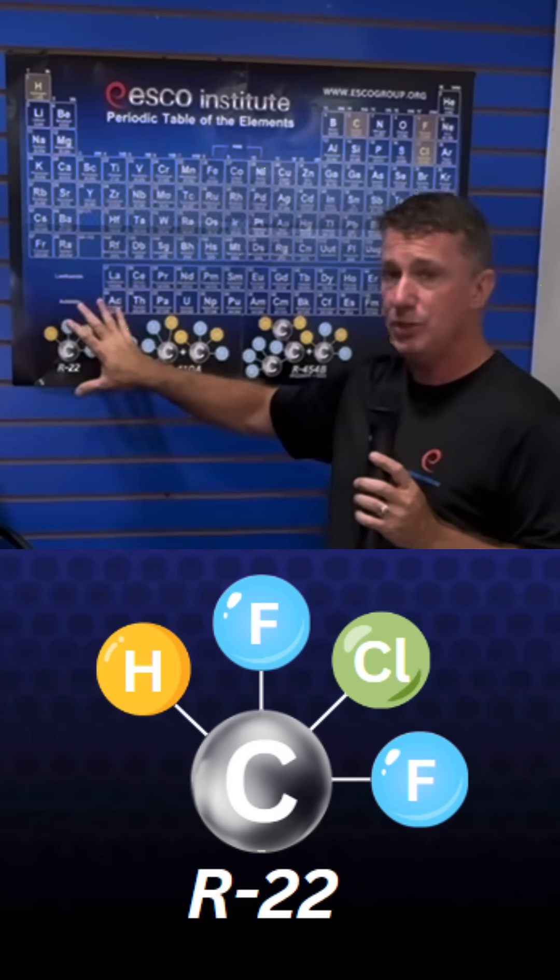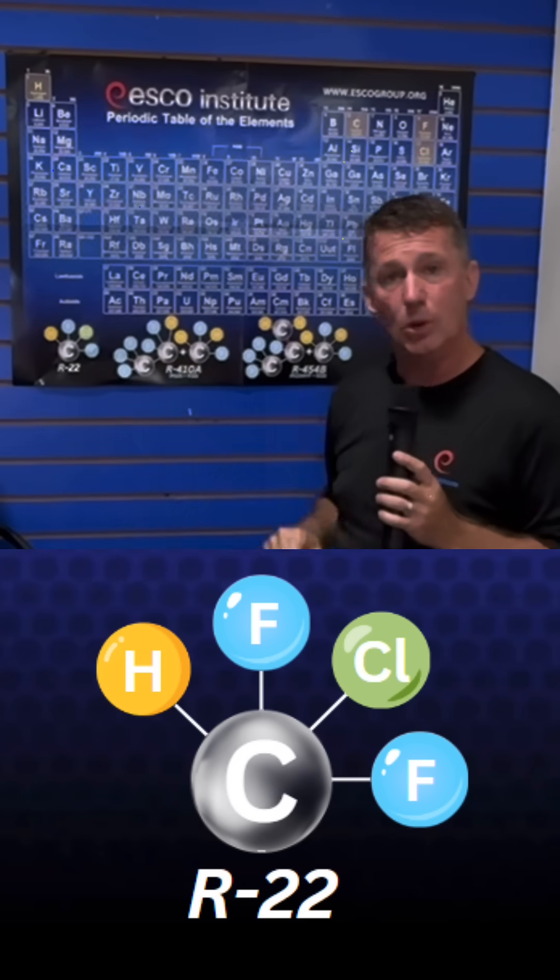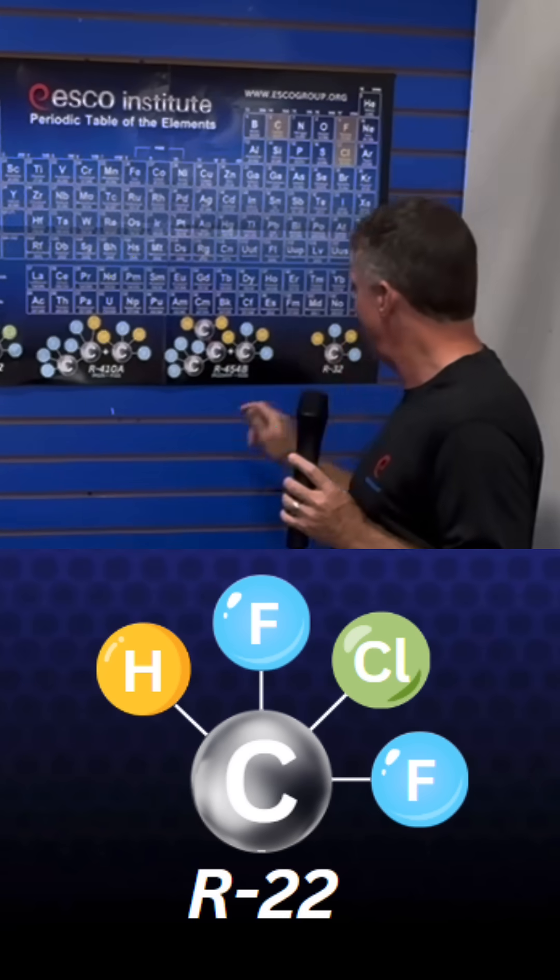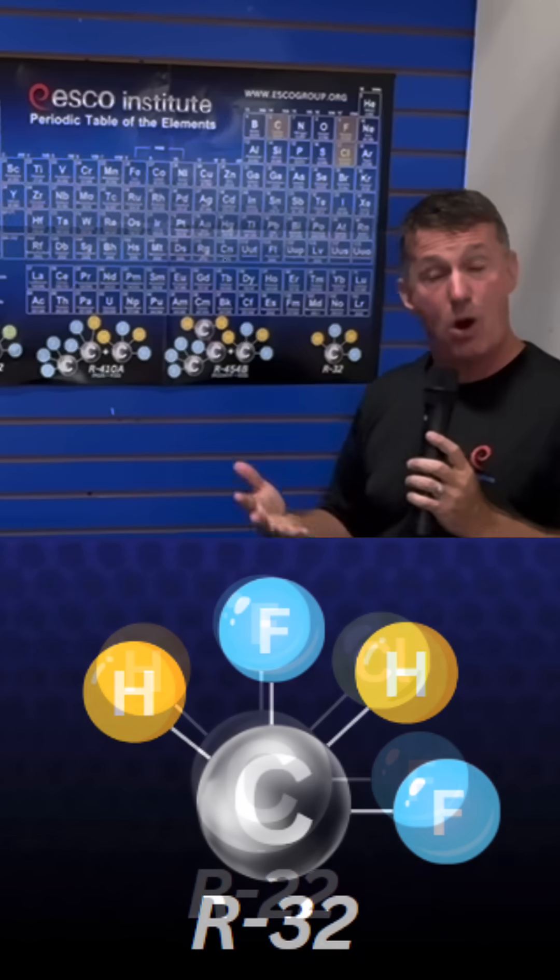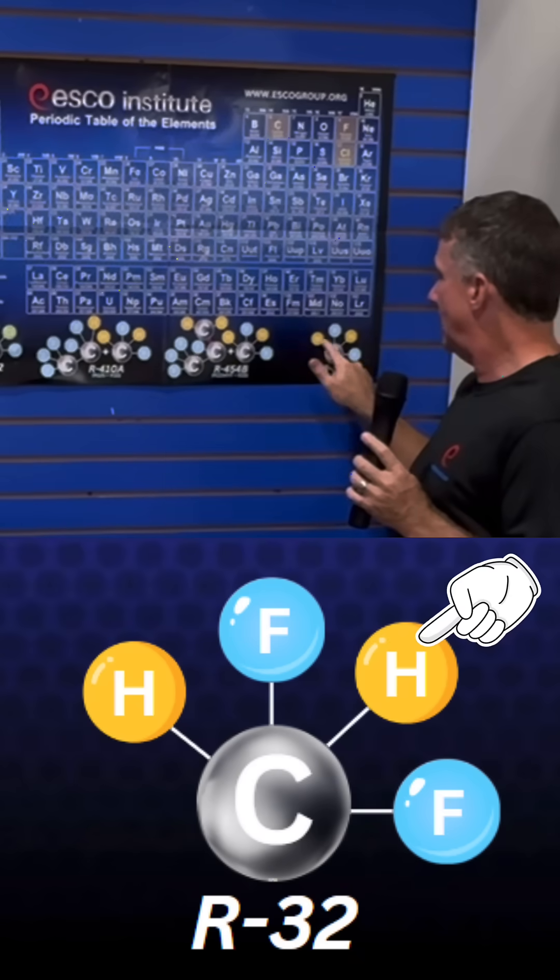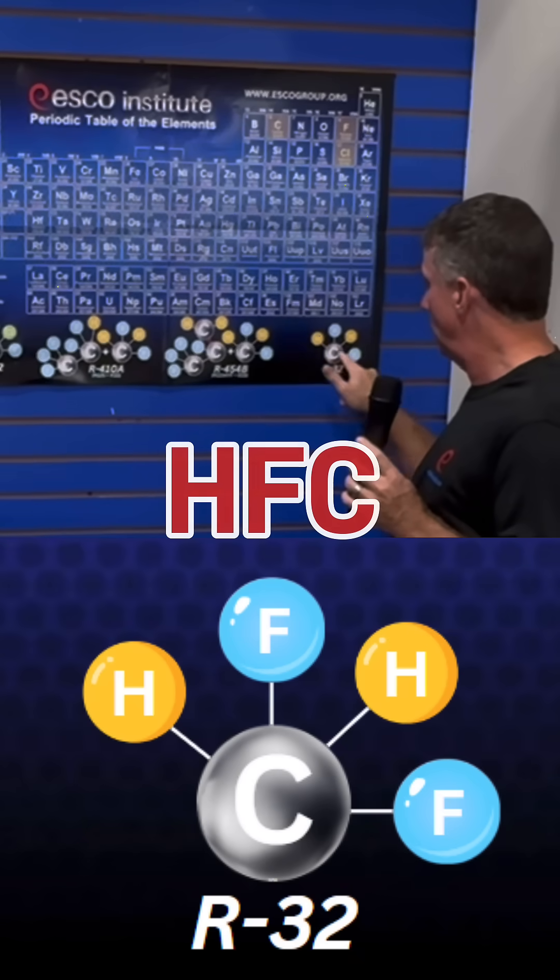Unfortunately, it had ozone depleting potential because of the chlorine atom. So we replaced the chlorine atom with a hydrogen atom to create R32, which is a hydrofluorocarbon.